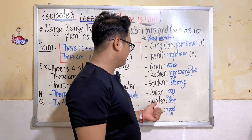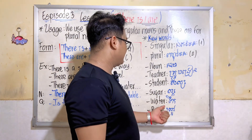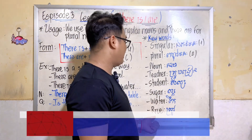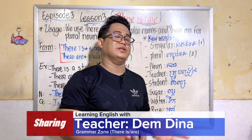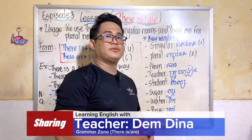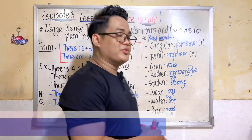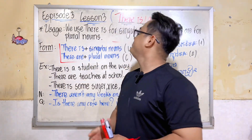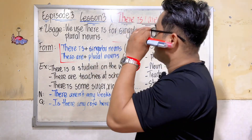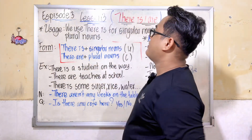The third keyword relates to uncountable nouns — for example: sugar, salt, water, and rice.